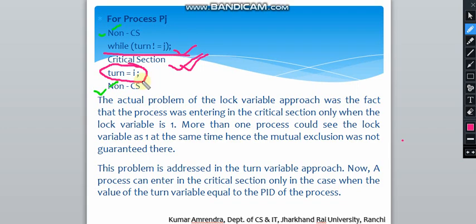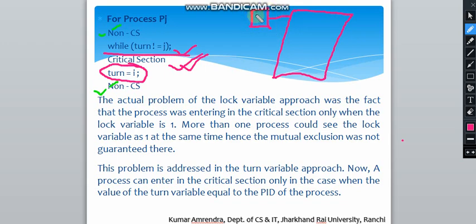The actual problem with the lock variable approach was that a process could enter the critical section only when the lock variable was 1. Since 1 is always true and 0 is false, the problem was that when the value was 1, the process was eligible to enter. But more than one process could see the lock variable as 1 at the same time, so mutual exclusion was not guaranteed.